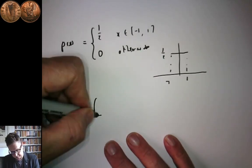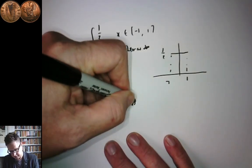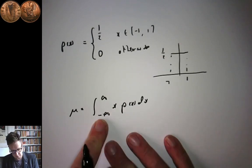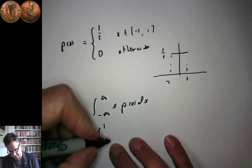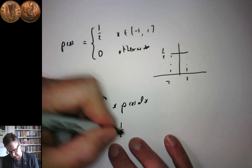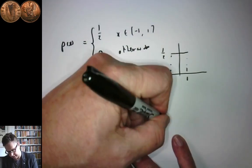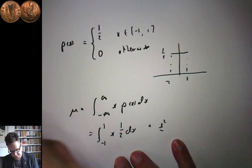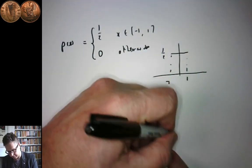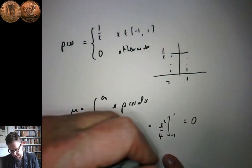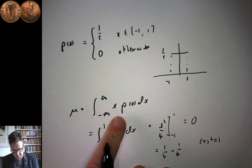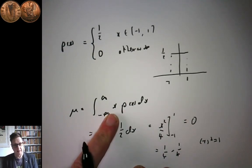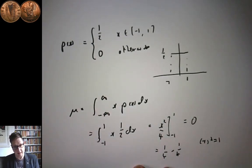Mu will be equal to the integral from minus infinity to infinity of x times p(x) dx. Since p(x) is zero outside the interval, this reduces to the integral from minus one to one of x times one half dx, which equals x squared over four evaluated from minus one to one. That equals zero, because it will be a quarter minus a quarter, since minus one squared equals one. In fact, you can see it clearly: p(x) is symmetric and x is anti-symmetric, so the integral of an anti-symmetric quantity over a symmetric interval is always zero.